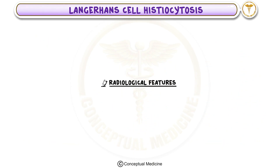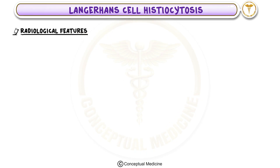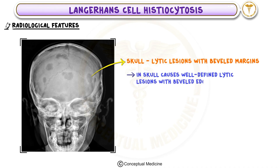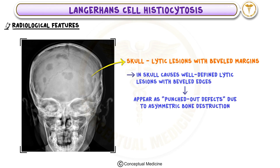Radiological Features: Let's go through the key radiological findings in different parts of the body. 1. Skull — Lytic lesions with beveled margins: In the skull, LCH causes well-defined lytic lesions with beveled edges. These appear as punched-out defects on X-rays due to asymmetric bone destruction.